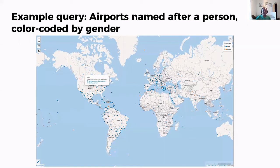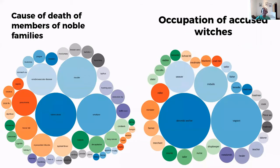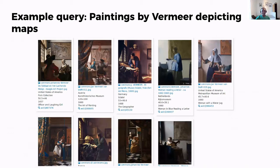Here we have a map generated by the Wikidata Query Service that shows airports of the world named after a person, where the color of the dots represents the gender of the person. On the left is a bubble chart of causes of death of members of noble families, and on the right, a bubble chart showing the occupation of accused witches. And yes, that kind of data does exist on Wikidata. Finally, here is an example of paintings depicting maps by the Dutch painter Vermeer.